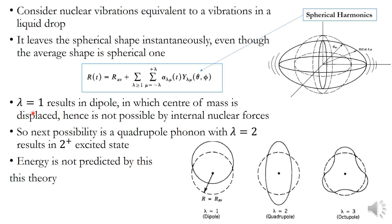When λ = 1 this results in a dipole, in which the center of mass is displaced. Since displacement of the center of mass is not possible by internal nuclear forces, we do not consider the λ = 1 (dipole) case for nuclear vibrations. The next higher possibility is the quadrupole mode with λ = 2.